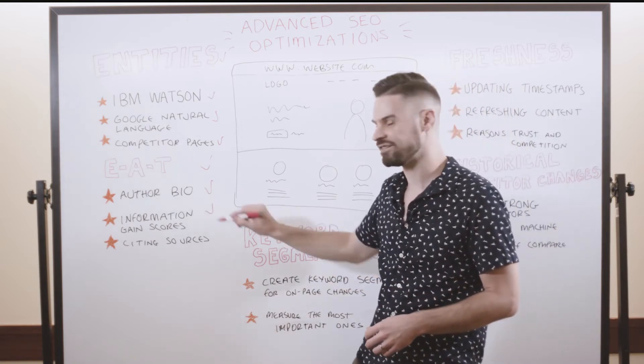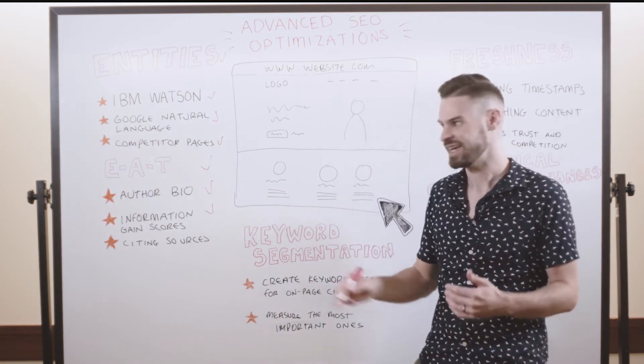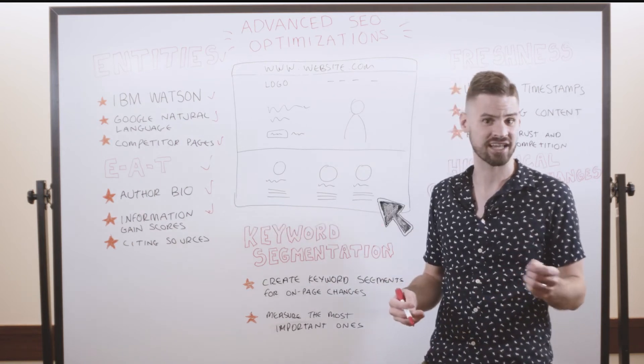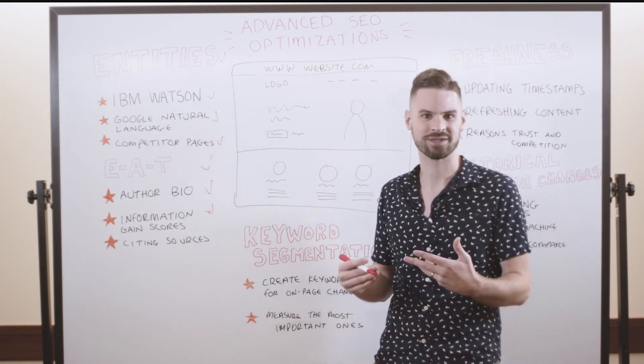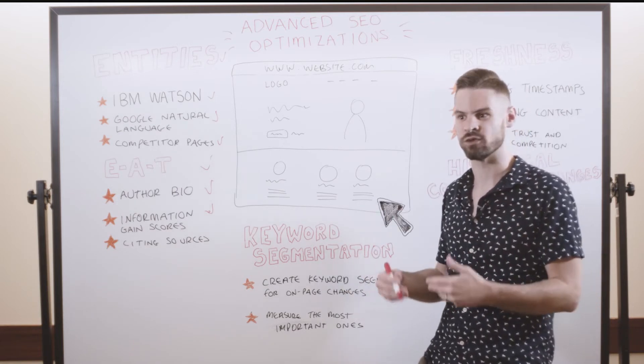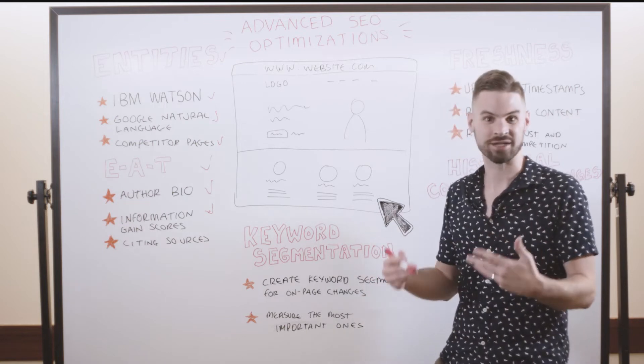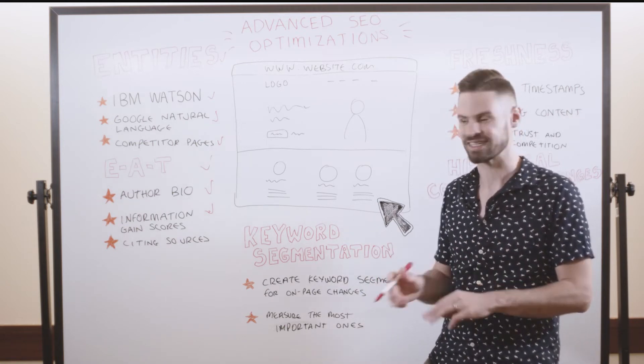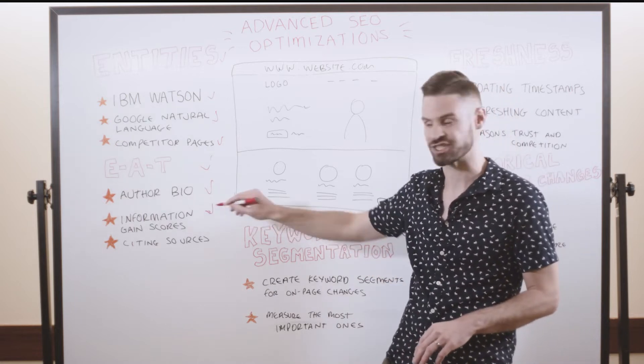As well, another thing I love to think about with on-page optimizations is this concept of information gain scores. It's one of my favorite patents analyzed by Bill Slawski, where he talks about the fact that Google looks to reward content that adds to the search results and doesn't just repeat what's already out there. So think about where you can leverage your own unique expertise, data, and insights to benefit from this concept of information gain scores.